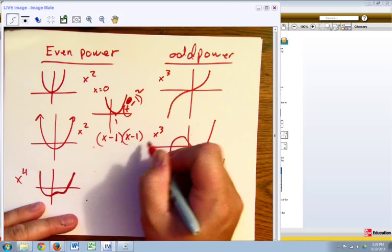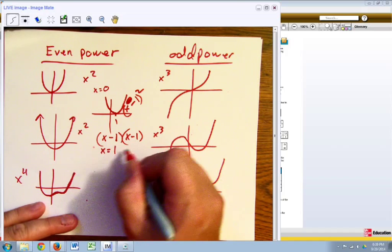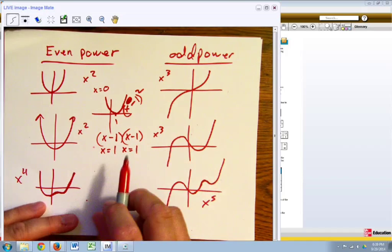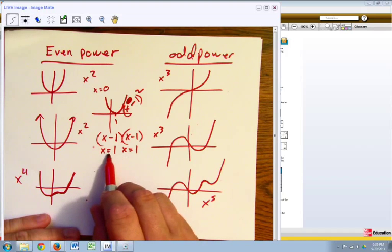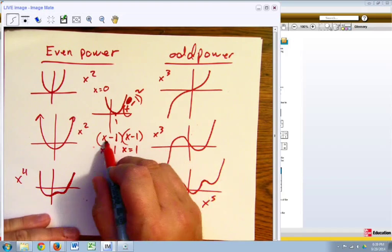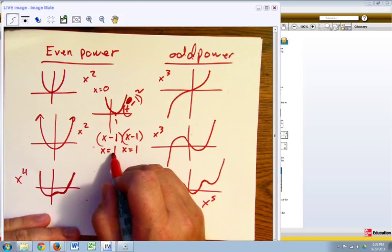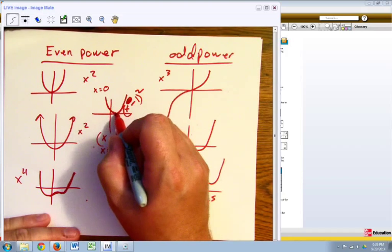What that means is 1 is the solution, but x minus 1, x minus 1 happens twice. So I have two solutions they just happen to be exactly the same. We call these solutions of multiplicity 2. If you have an even number on the multiplicity, it's just going to touch or be tangent to the x axis. If you have an odd number, it's going to go through.